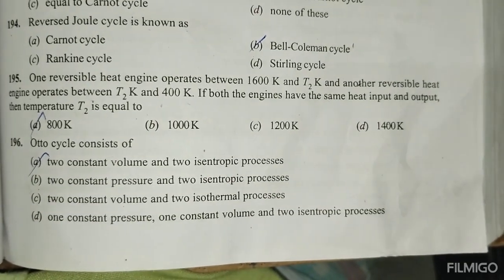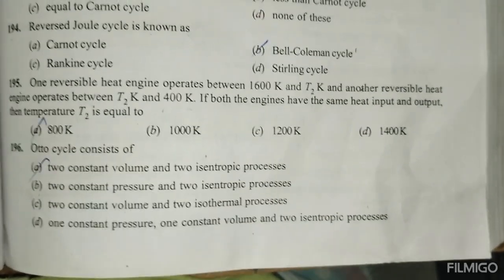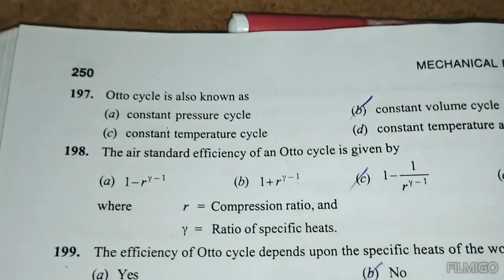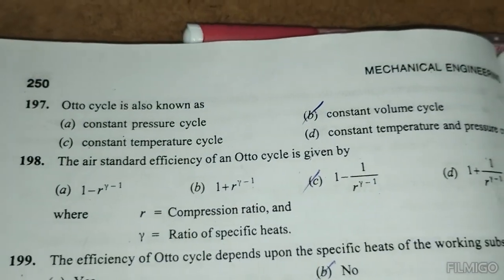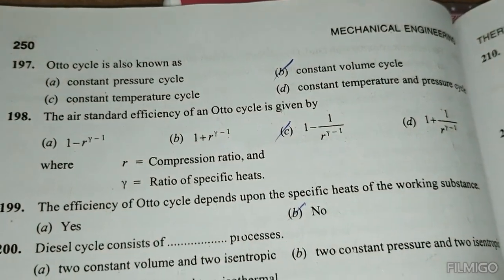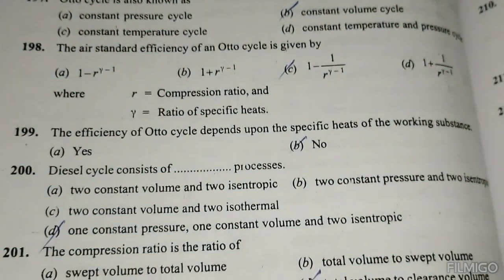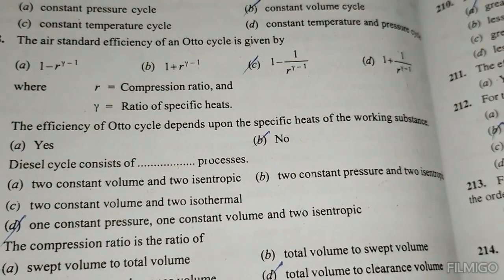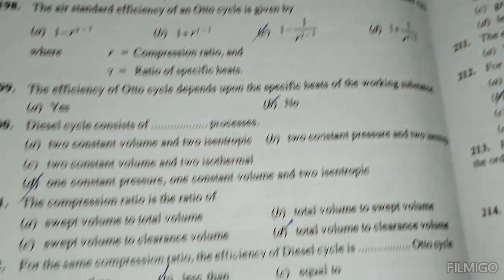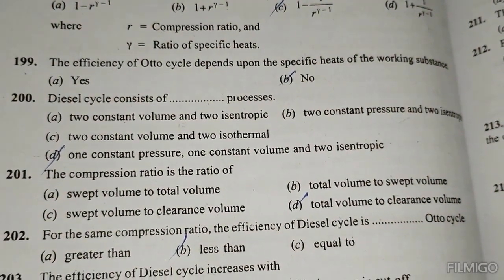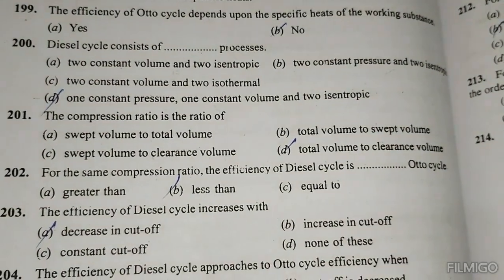The Otto cycle consists of 2 constant volume and 2 isentropic processes. The Otto cycle is known as the constant volume cycle. The air standard efficiency of the Otto cycle is given by 1 - 1/R^((γ-1)). The efficiency of the Otto cycle depends upon the specific heats of the working substance. The Diesel cycle consists of 1 constant pressure, 1 constant volume, and 2 isentropic processes.